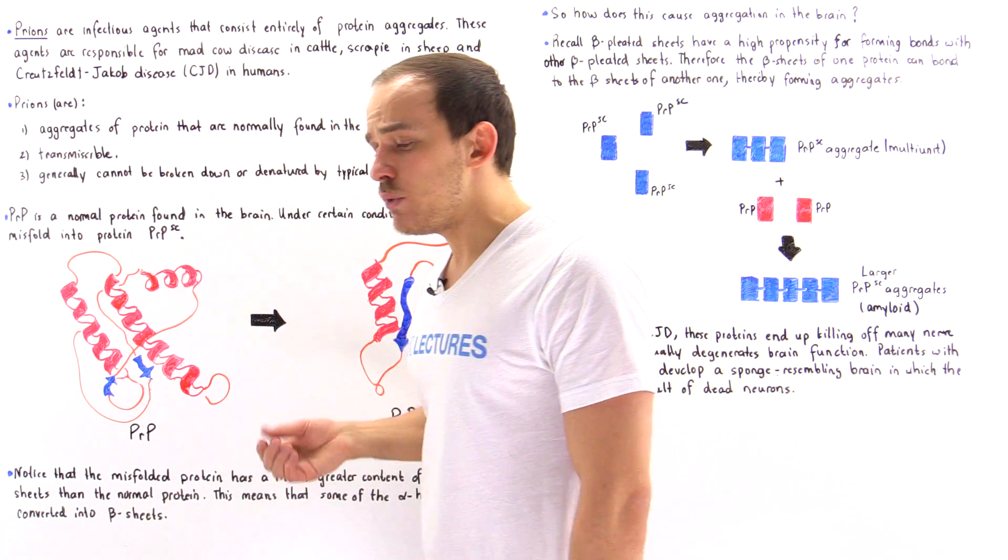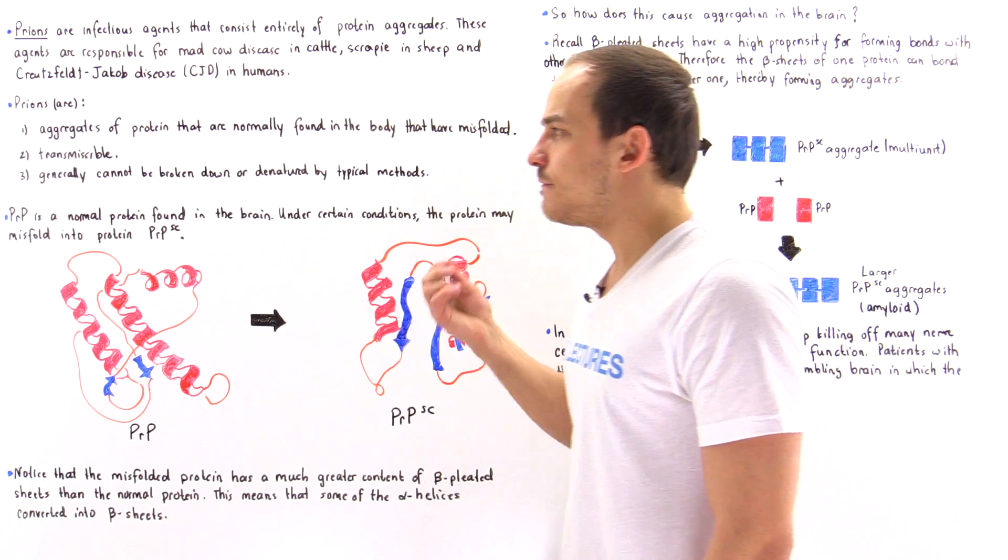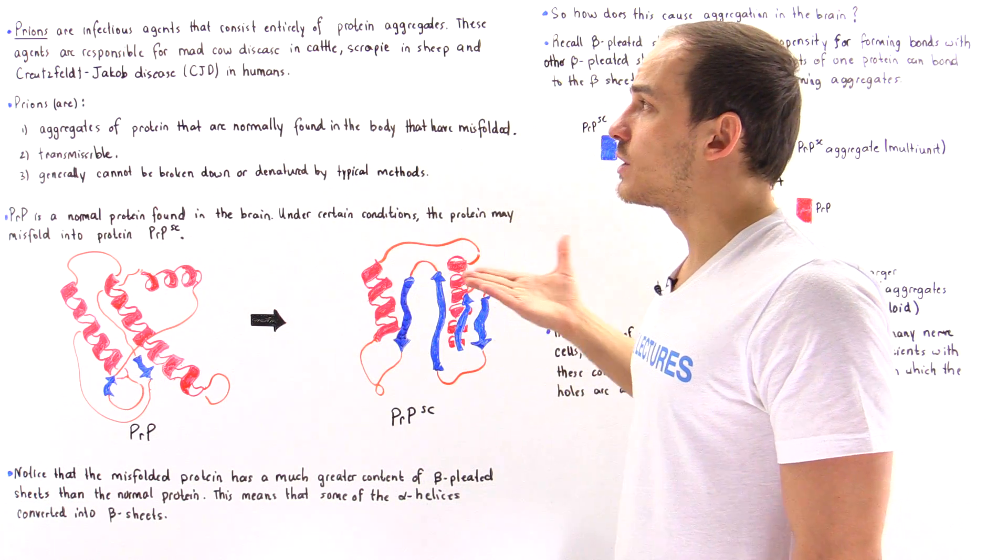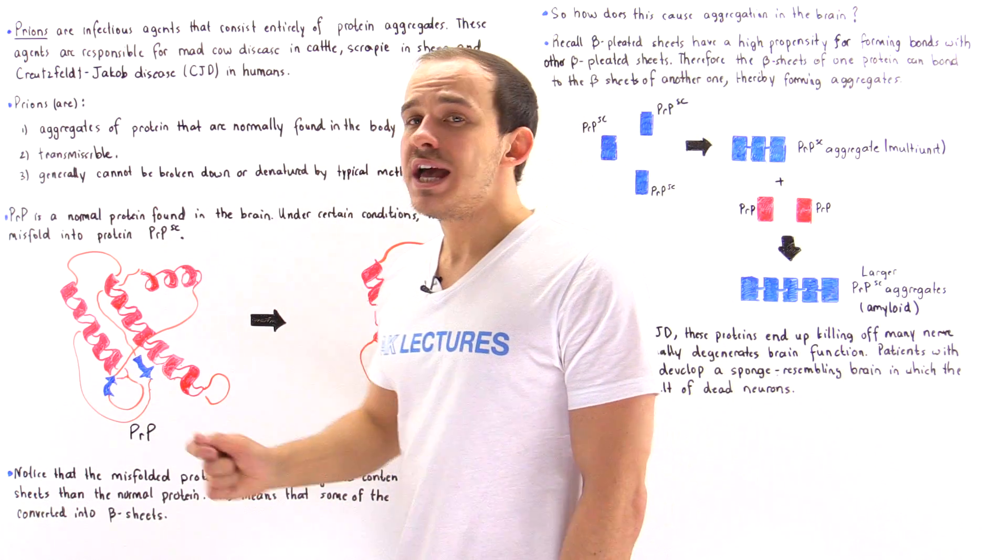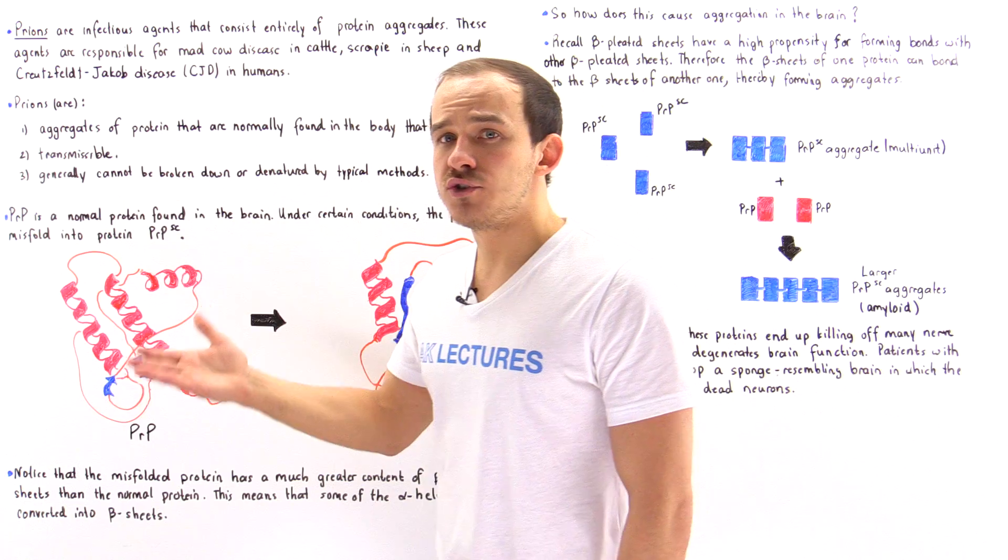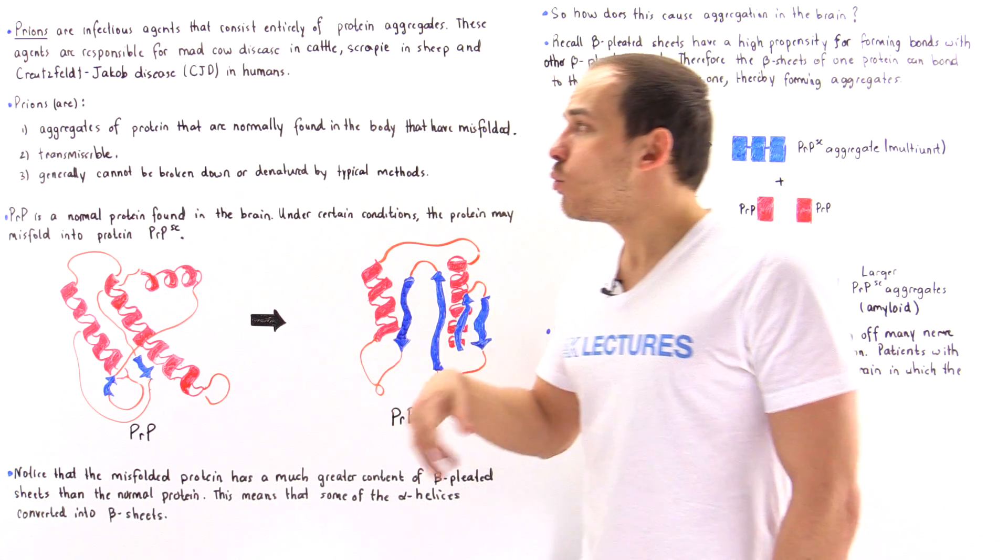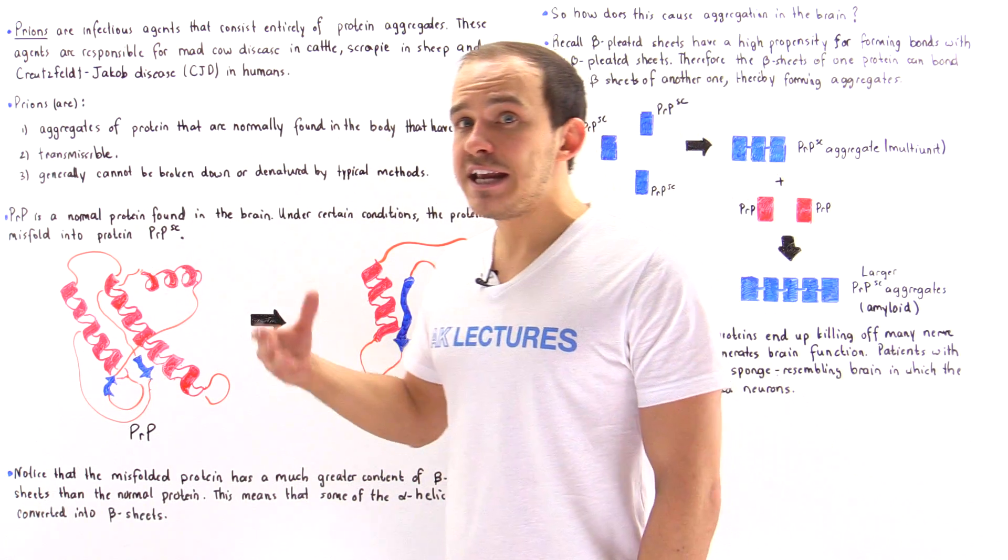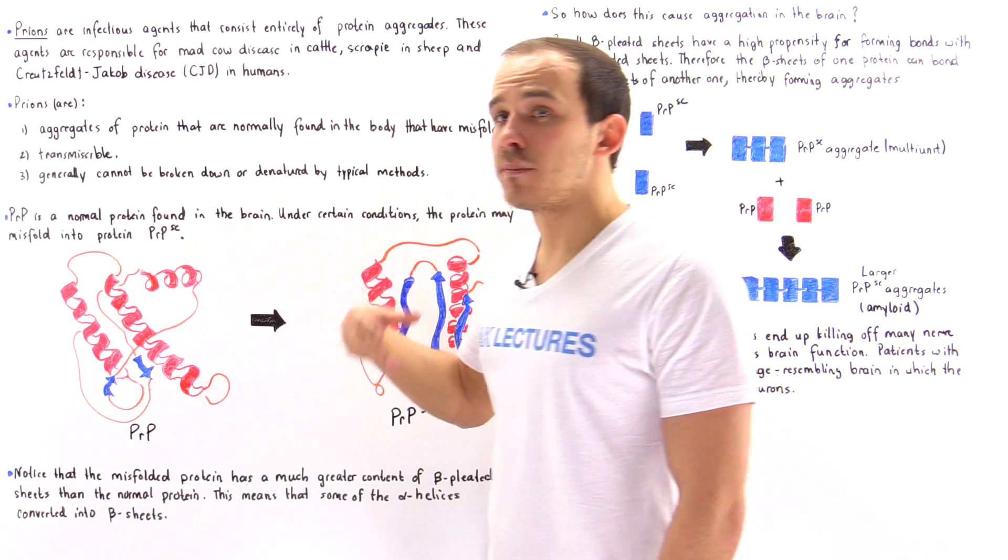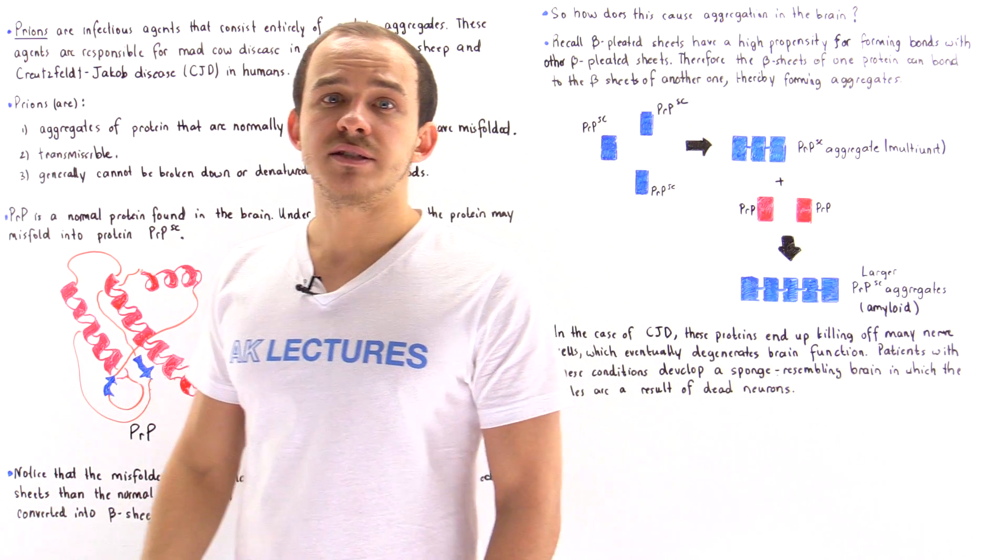Until recently, we thought that only bacterial cells and viruses are capable of infecting our bodies and the bodies of other animals. But now we know that these aggregates of misfolded proteins known as prions can also act as infectious agents. They can easily be passed down from one individual to another and even from one organism to another, as we saw with those individuals that ate beef from cows that had mad cow disease. Those prions were passed down to those individuals via the beef because the beef contained those prions in the cells.